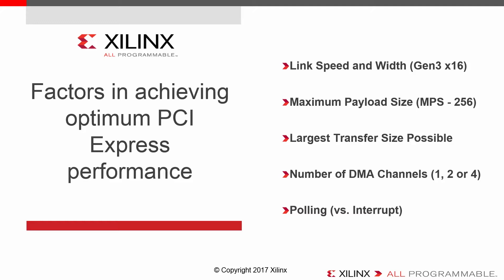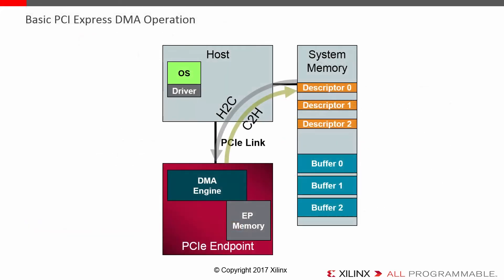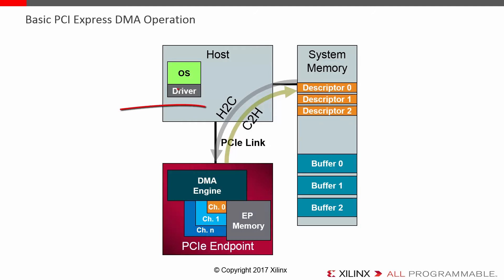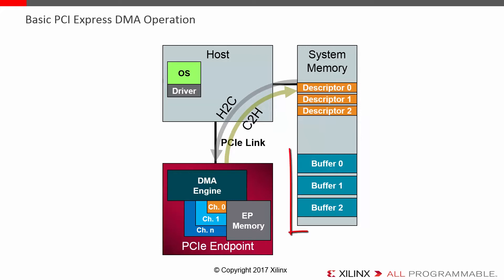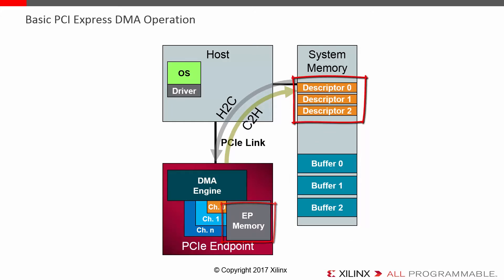Let's look at the basic operation of a DMA and get some terminology down. When we want to move data from system memory down to our PCI Express endpoint, we call that a host-to-card transfer, or H2C. Likewise, moving data from our PCI Express endpoint to system memory is a card-to-host transfer. We have buffers allocated in system memory and our endpoint memory, and we have descriptors that tell our DMA engine where to write or read data from, where to put that data, and how much data there is.